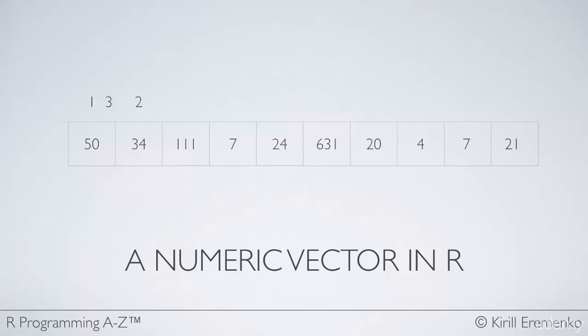So in this case it starts with 1, 2, 3, 4, 5, 6, 7, 8, 9, 10. Notice the difference here: if you've studied other programming languages, indexation of arrays normally starts with 0, so it would be 0 all the way up to 9. But in R, indexation starts with 1, which makes things a little bit easier, especially if you're just starting out in programming. So that is a numeric vector of length 10.